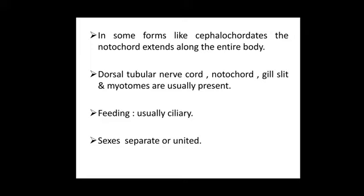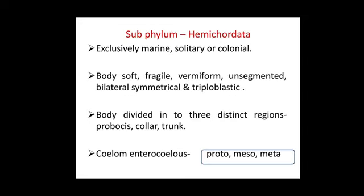Now we study Subphylum Hemichordata. Acraniata or Protochordata includes three subphyla: Hemichordata, Urochordata, and Cephalochordata. Hemichordata organisms are exclusively marine, solitary or colonial organisms.